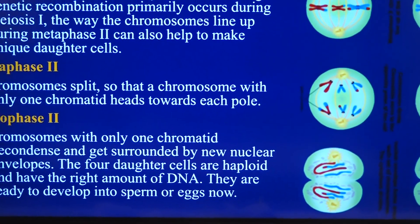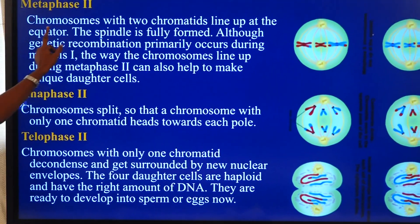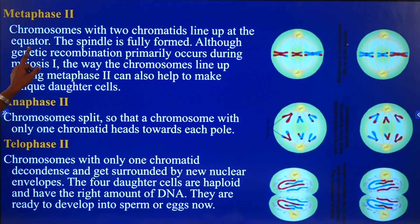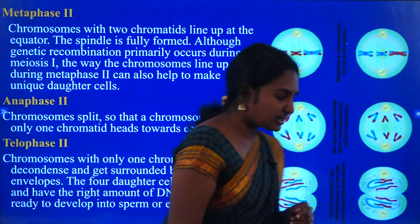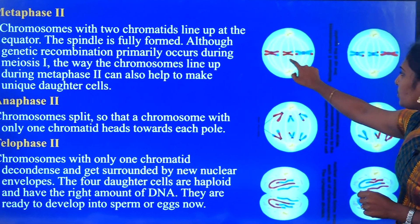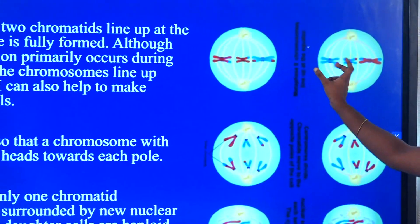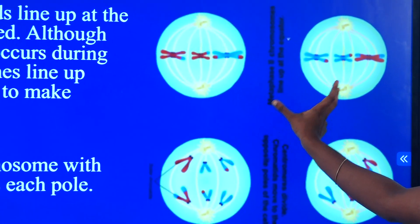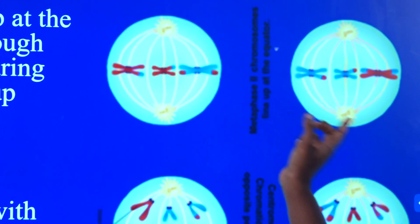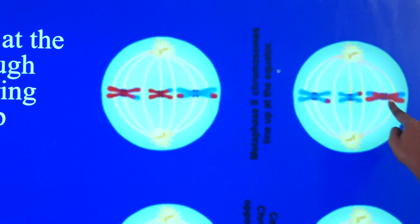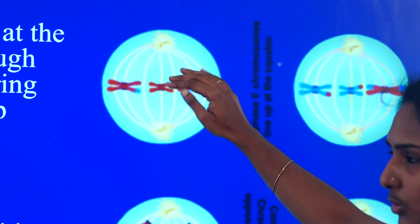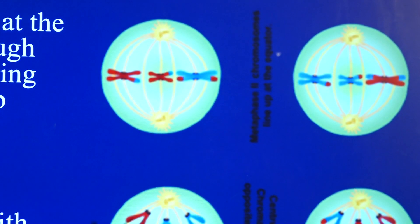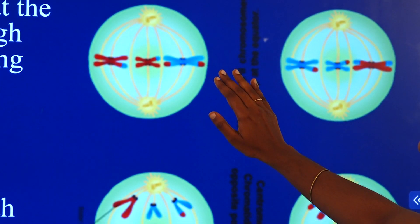Moving on to the next stage — that is metaphase II. The chromosomes with two chromatids line up at the equator. The spindle fibers are fully formed. As you can see in the diagram, the chromosomes in both cells are arranged at the equator with the help of spindle fibers. Recombination is already complete at this point.